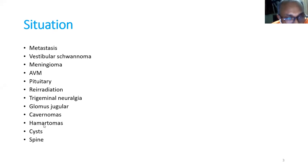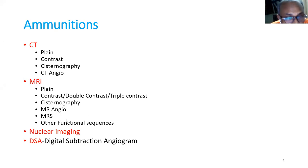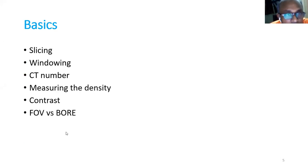The situations in which we go for radiation in stereotaxy include mostly metastasis, vestibular schwannoma, meningioma, AVM, pituitary tumors, trigeminal neuralgia, glomus jugulare, cavernomas, hematomas, cysts, and spine. Our imaging tools include plain CT, contrast CT, MRI sequences, MR angiography, MRS, functional sequences, nuclear medicine imaging, and digital subtraction angiogram.